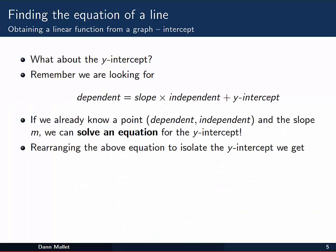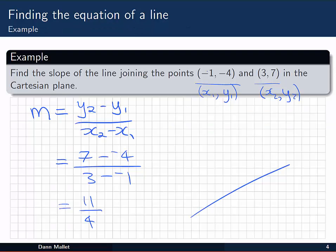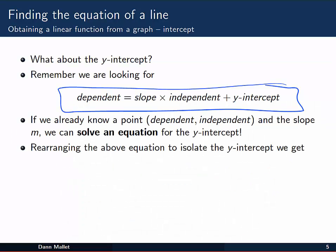But what about the y-intercept? Well, remember that we're looking for something of this form, dependent equal to slope times independent plus y-intercept. If we already know a point on the line, like we did in the previous example, we knew some points, that means we know a specific coordinate, dependent independent.